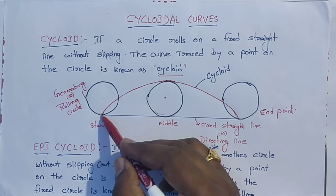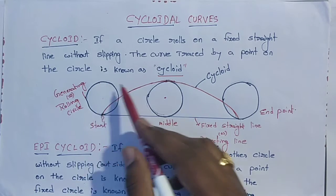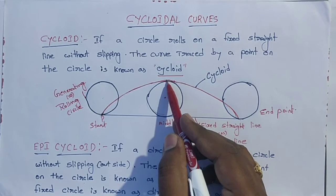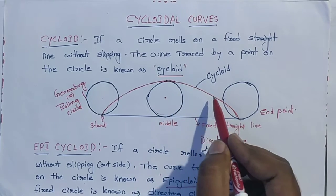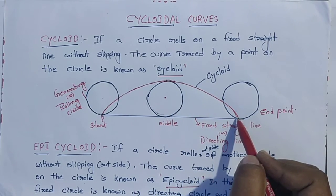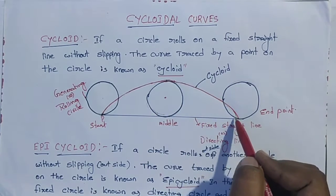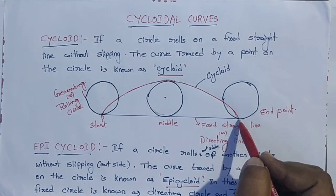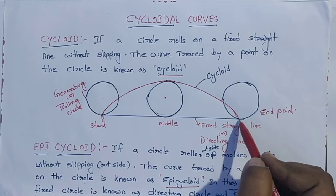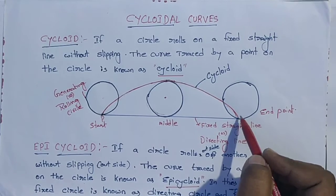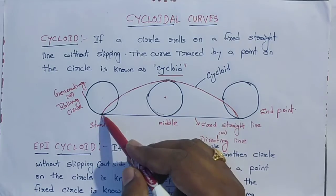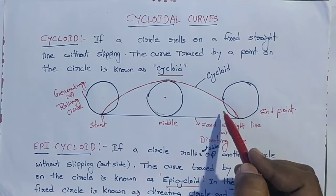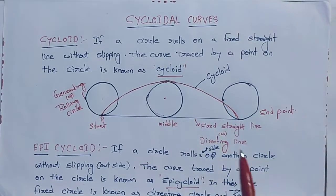At a rotation of 180 degrees, the point reaches the topmost point of the circle. After one more 180 degrees — that is, one full revolution — the point again reaches its original position. The curve traced by this point on the circle is known as a cycloid.